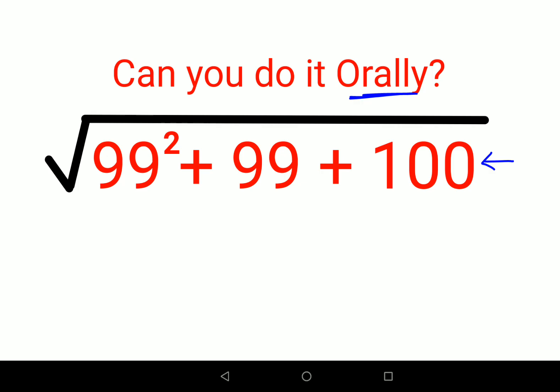See, first thing what you need to do is you have to be very clear about the method of simplification. So here, if you put this, we have what? 99 squared and 99. So let's take 99 common.